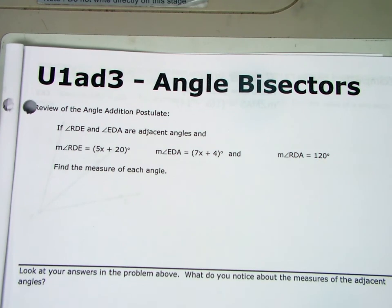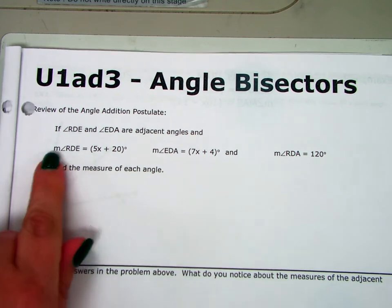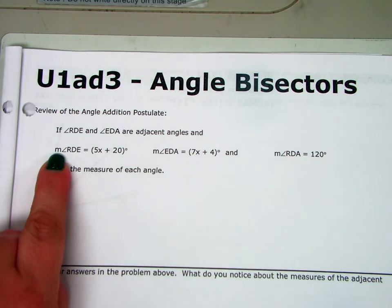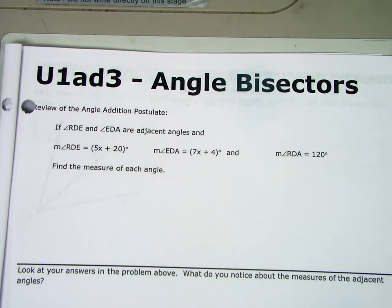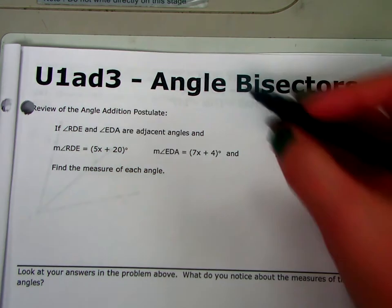So I have: if angle RDE and angle EDA are adjacent angles, and the measure of angle RDE equals 5x plus 20, and the measure of angle EDA equals 7x plus 4, and the measure of angle RDA equals 120, find the measure of each angle. I know I have adjacent angles but I don't know how big they are. One could be obtuse, one could be acute — they share a vertex and a side, and they don't overlap.